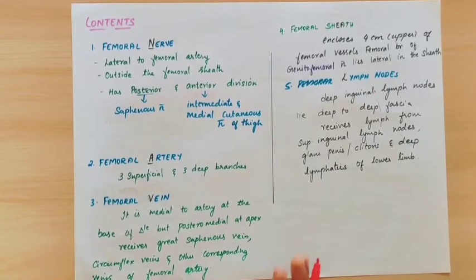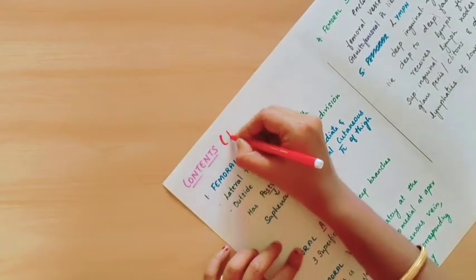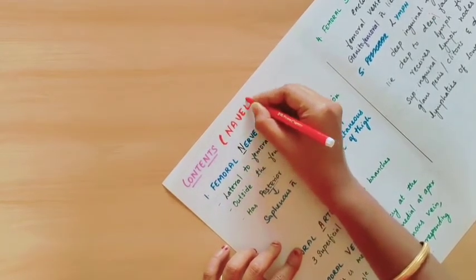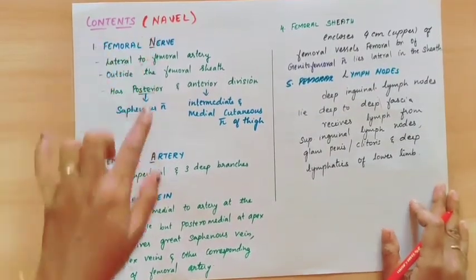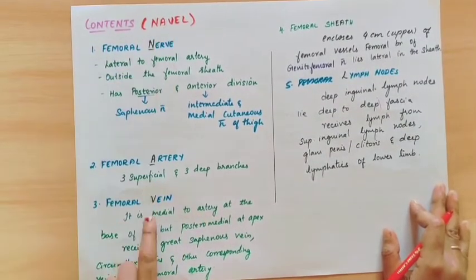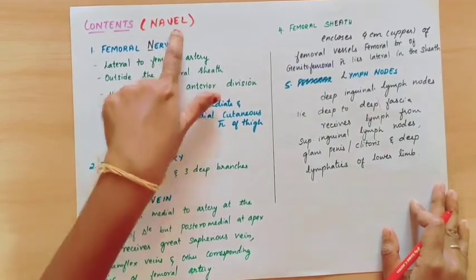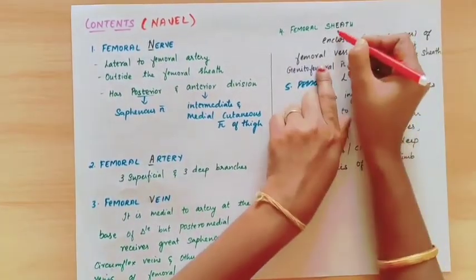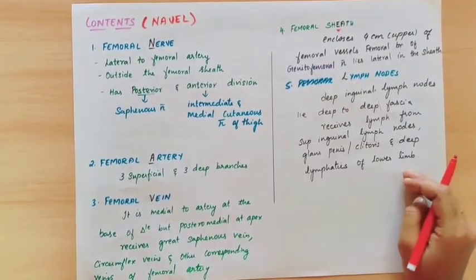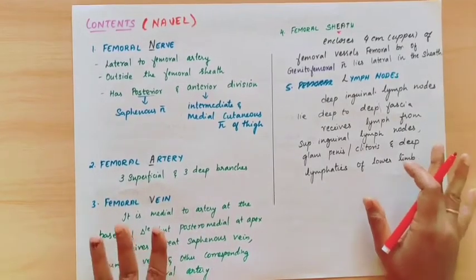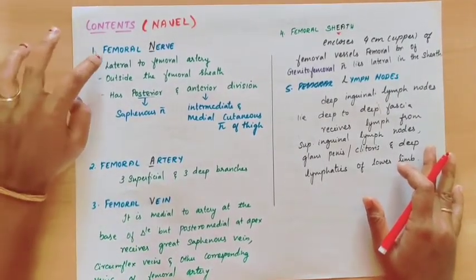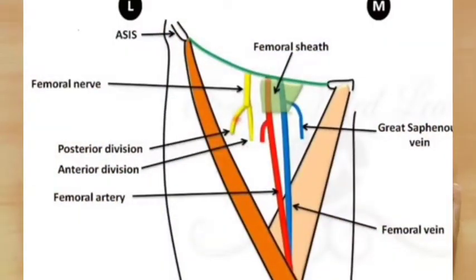Now coming to the contents of the femoral triangle. You can use the mnemonic NAVEL: N stands for femoral Nerve, A stands for femoral Artery, V stands for femoral Vein, E stands for femoral sheath (Empty space), L stands for Lymph nodes. These five structures are present in the femoral triangle. The femoral nerve is lateral to the femoral artery, and the femoral sheath is a funnel-shaped sheath enclosing the femoral artery, femoral vein, and lymphatics.